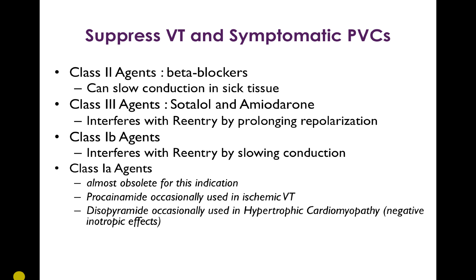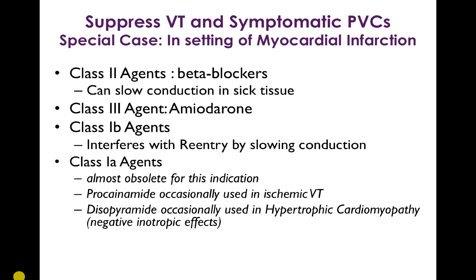The third umbrella is suppressing ventricular tachycardia and symptomatic premature ventricular contractions. Class 2 agents (beta blockers) are important here because they slow conduction in sick tissue. Class 3 agents — sotalol and particularly amiodarone — are also useful, as they interfere with re-entry by prolonging repolarization. Class 1B agents can be useful in ventricular tachycardia by interfering with re-entry through slowing conduction. In the specific case of VT in the setting of myocardial infarction, beta blockers, amiodarone, and class 1B agents are again the go-to drugs.